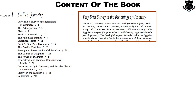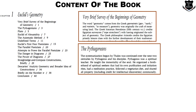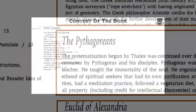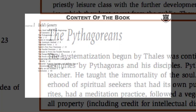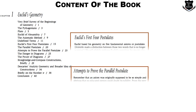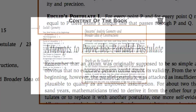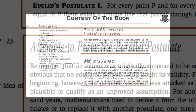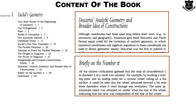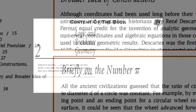The first chapter covers Euclid's geometry, starting with a brief survey of the beginnings of geometry — the Pythagoreans and Euclid of Alexandria — because knowing the founders and how things happened is important. The book covers Euclid's first four postulates, attempts to prove the parallel postulate, Descartes' analytic geometry, and briefly the number pi along with a little bit of history. You establish a relationship with these geometers from way back in history — and that is how you start learning.